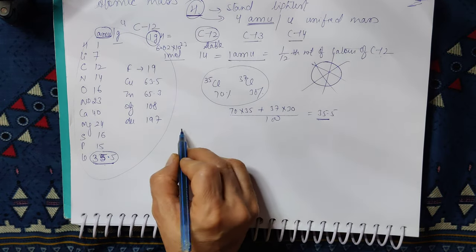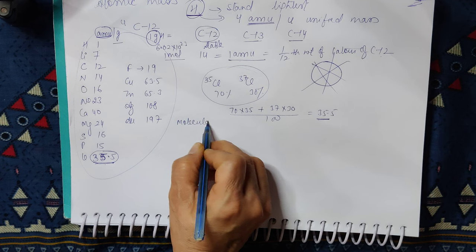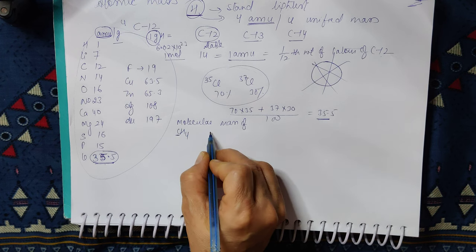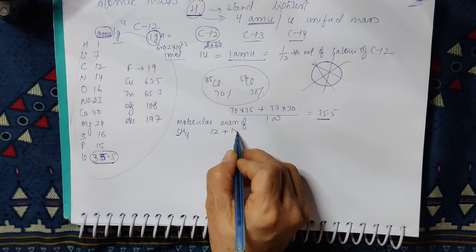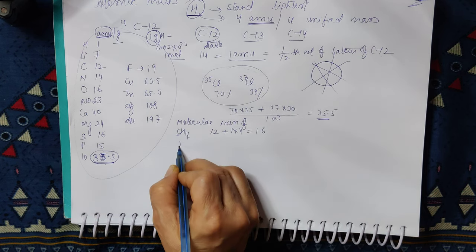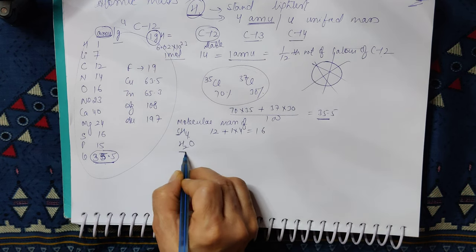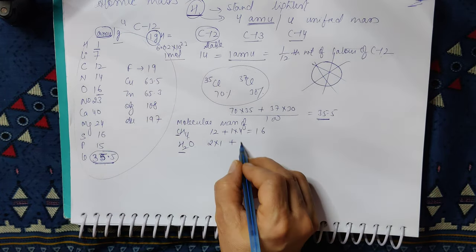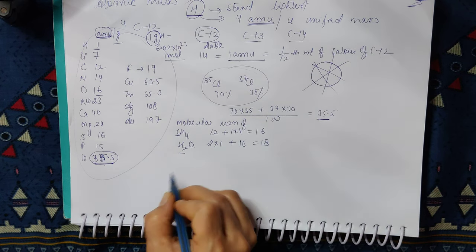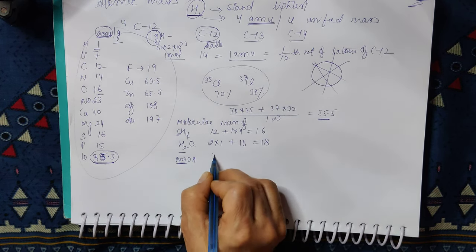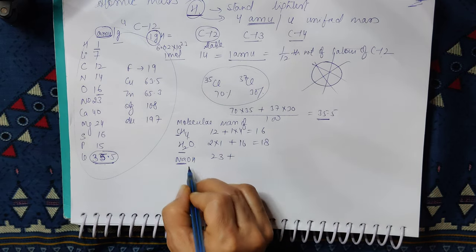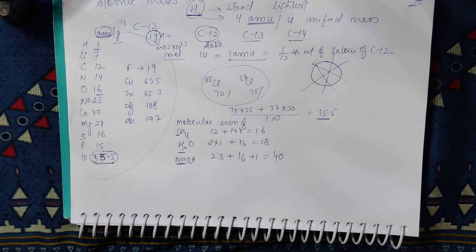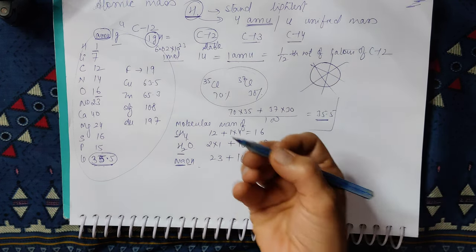Calculate the molecular mass of the following. Like methane, how do we calculate? Carbon is 12, 1 hydrogen is 1, 4 hydrogens are there, 1 into 4 is 16. How do we get water? 2 hydrogens, 2 into 1 because atomic mass is 1. Oxygen is 16. You will get 18. You will get NaOH. So sodium is 23, plus oxygen is 16, hydrogen is 1. You add it, 40 will make it. This way we have to get molecular mass.